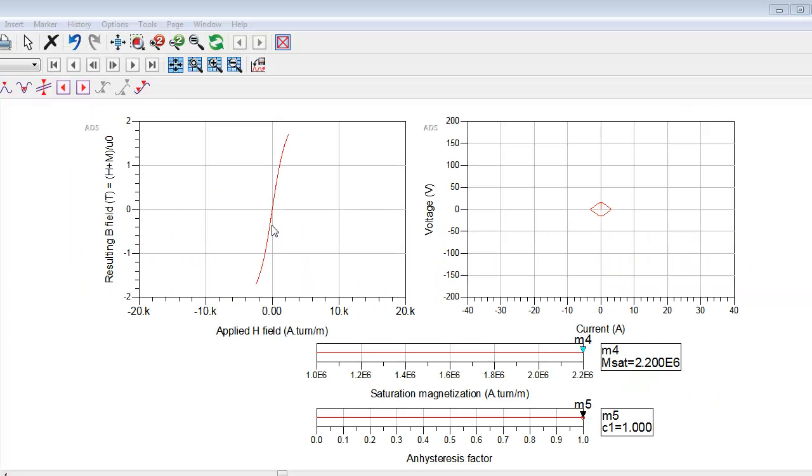The built-in components for inductance and transformers in most EDA tools have a linear relationship between the applied H field and the resulting B field, but in reality real-world inductors have effects like saturation.